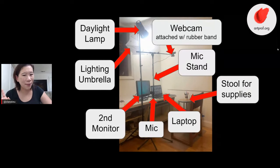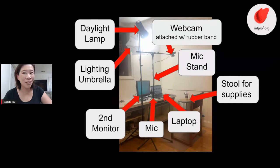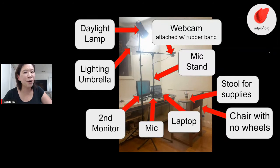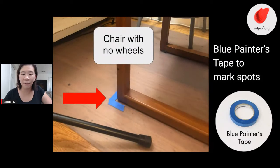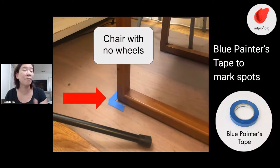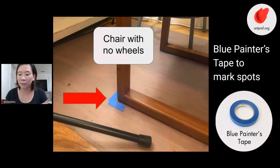This might seem silly but it's important — I always have a stool next to me for my supplies and a water bottle, because you don't want to have to get up once you're all set up. Also important: a chair with no wheels. In a drawing demo you need to be able to get back to the same position. I actually take blue painter's tape and mark spots on the floor, because sometimes I have a position for lecturing and a position for demonstrating, and I don't want to have to figure that out during a live stream.